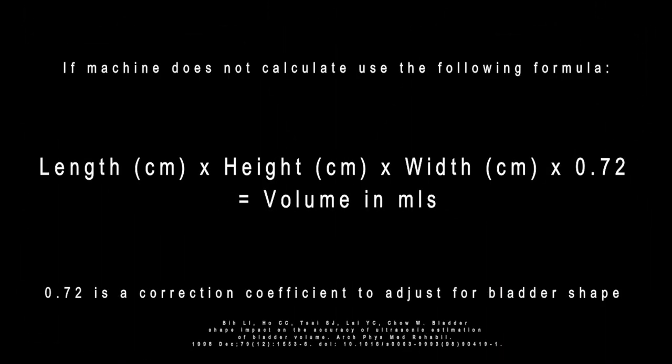Most machines should have an option to calculate the bladder volume. However, if your machine does not, you can use the following formula. Simply obtain the three measurements as shown, then multiply these measurements against each other and multiply this number again by 0.72. 0.72 is a correction coefficient that corrects for the shape of the bladder and can be used regardless of the shape.